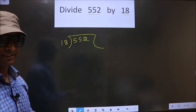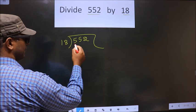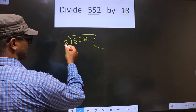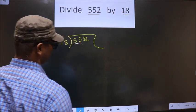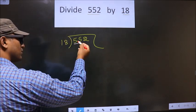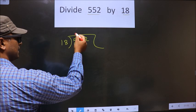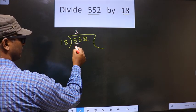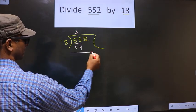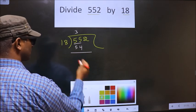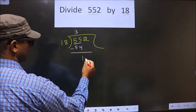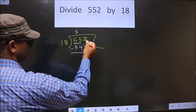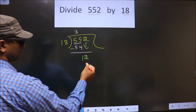Next. Now, here we have 5. 5 is smaller than 18, so we take two numbers, that is 55. A number close to 55 in 18 table is 18 times 3 is 54. Now you should subtract these two. 55 minus 54 is 1. Now this 2, you take it down.